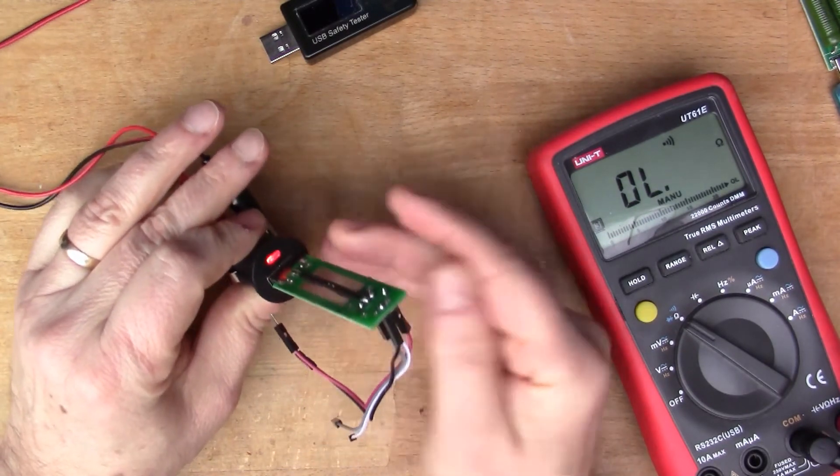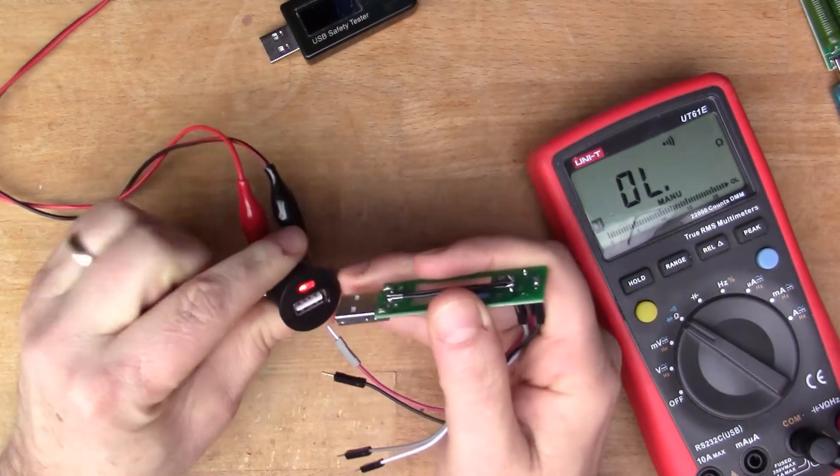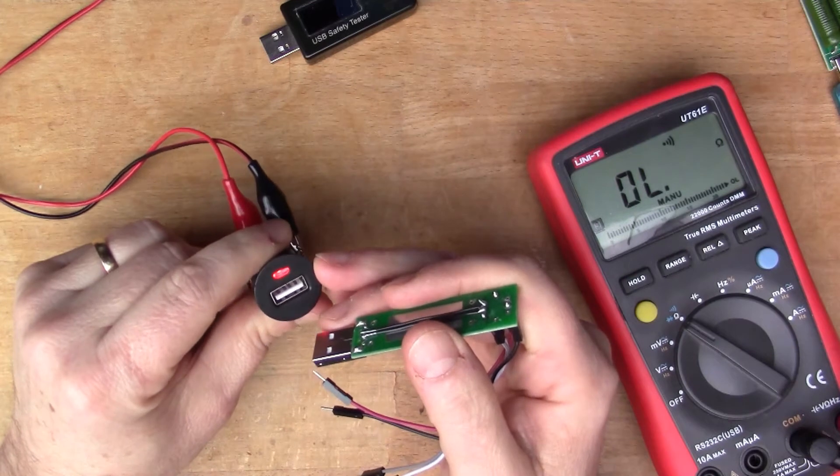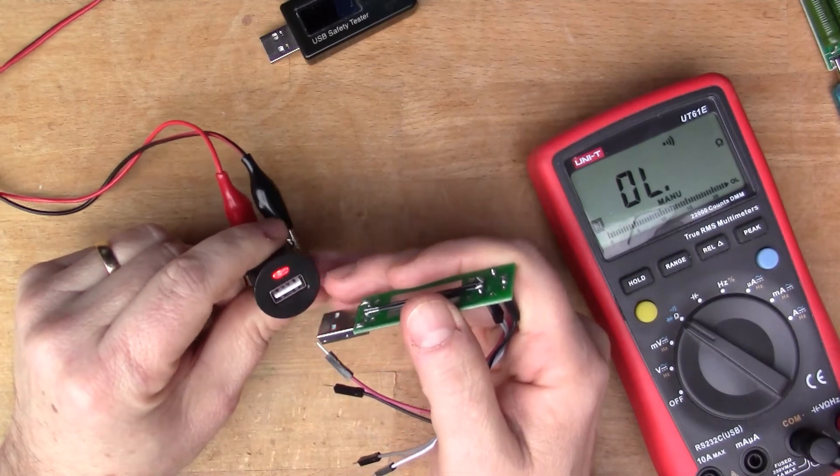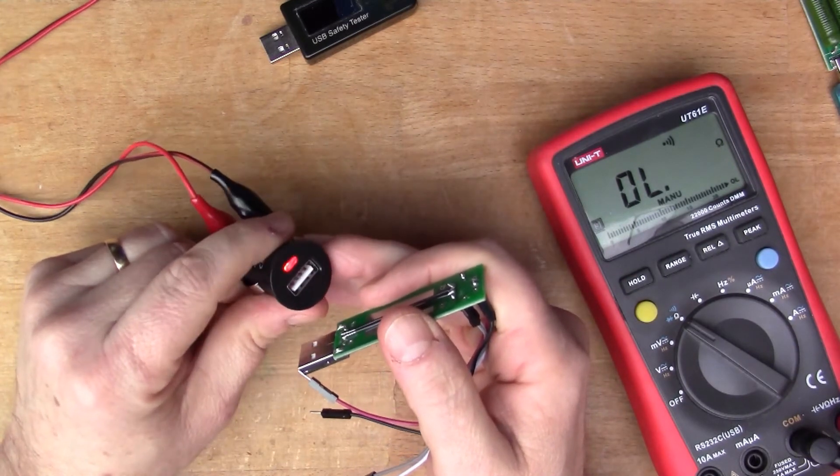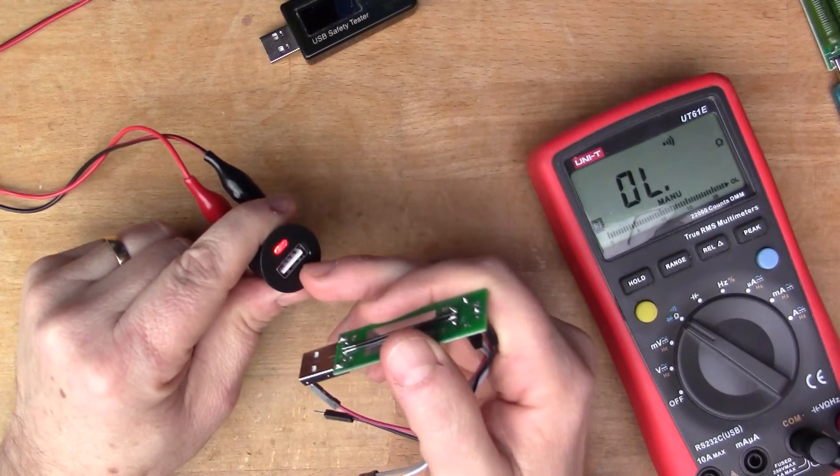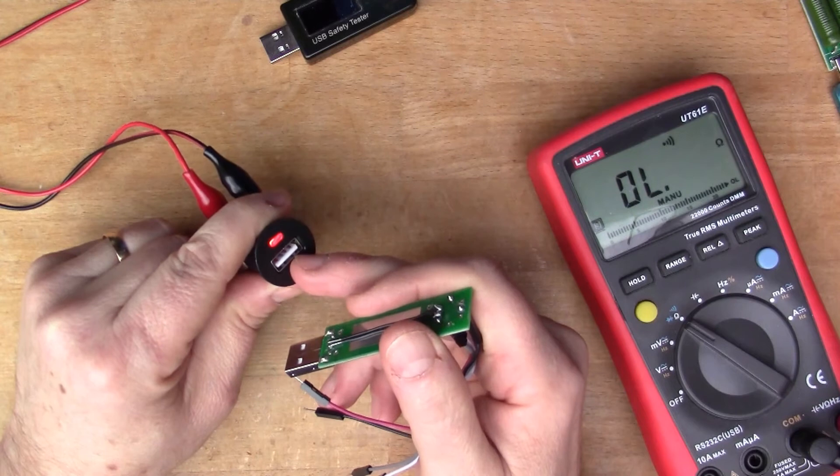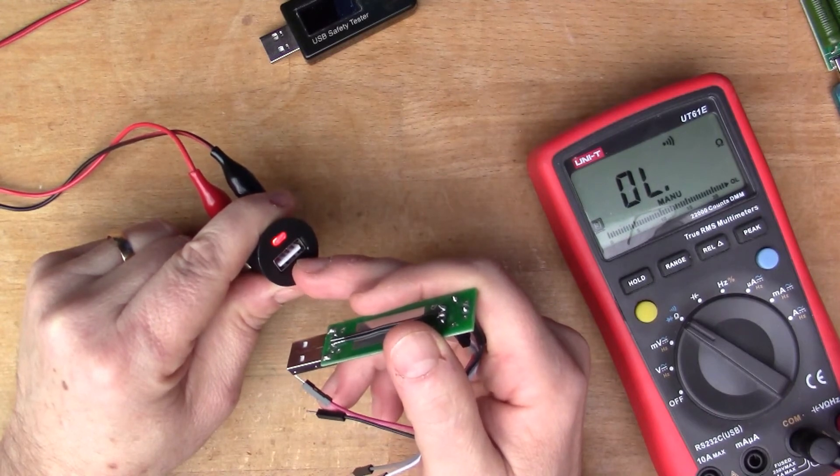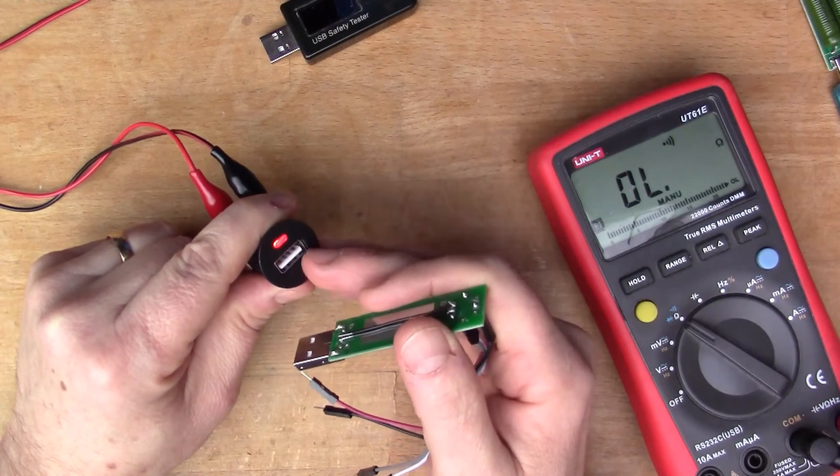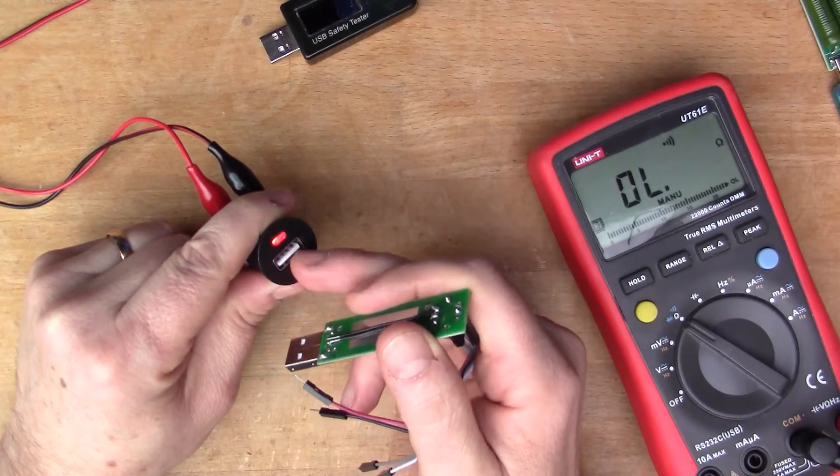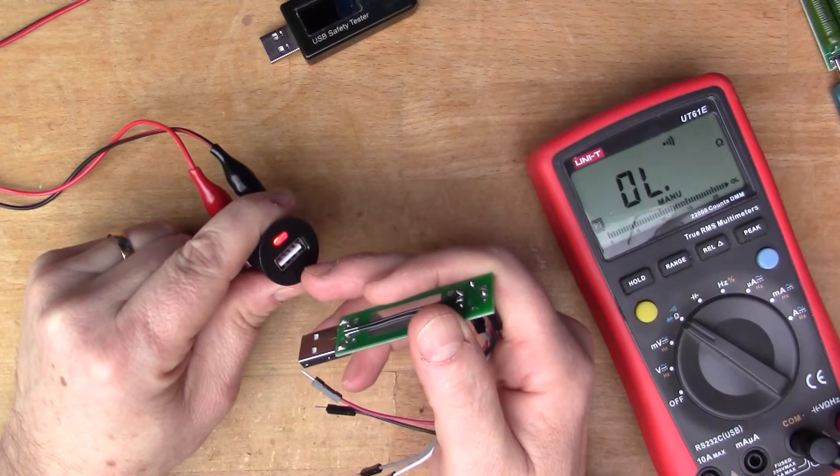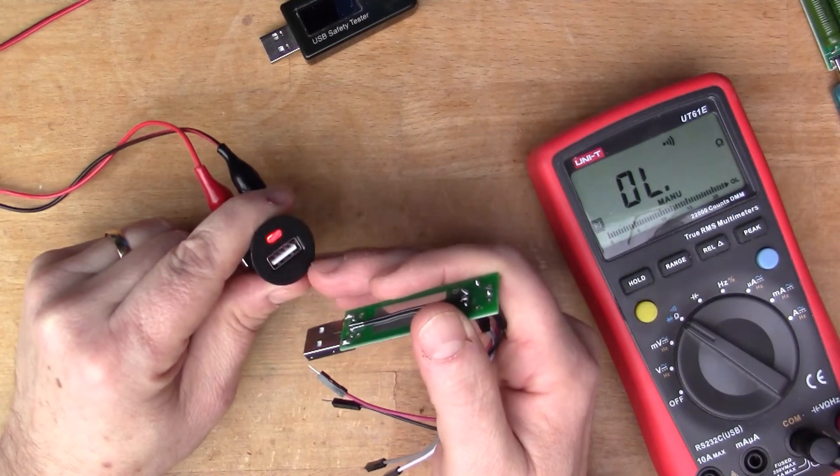One thing I can say for sure is that this particular car charger won't work very well with Apple products, or at least the Apple products will charge very slowly, because an Apple device needs particular voltages to be displayed on the D plus and D minus pins. If it just sees floating pins it will draw half an amp, so you'll end up with a much longer charging time.